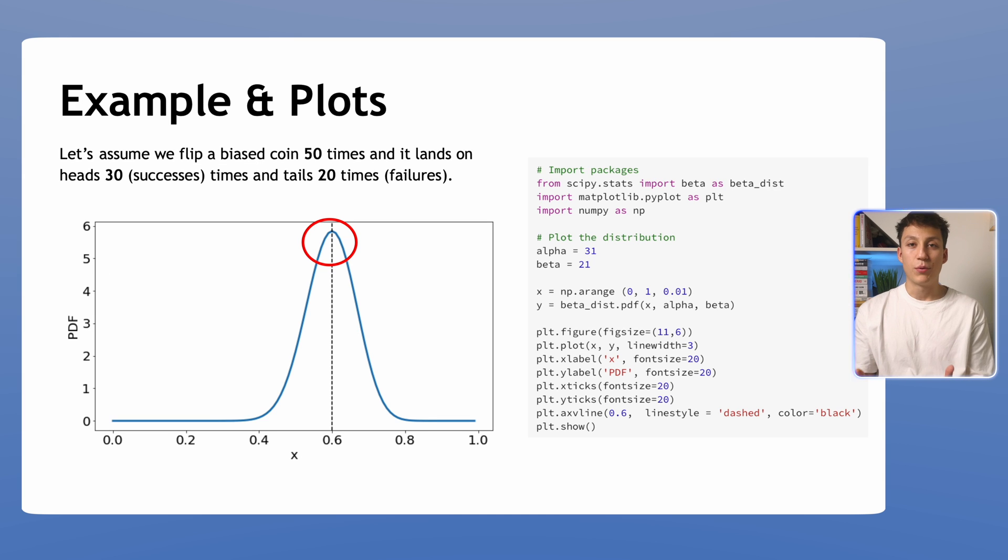Here's a really simple example. Let's assume I have a biased coin and I flip this coin 50 times and it lands on heads 30 times, which is our success, and lands on tails 20 times, which is our failure. We can plot this in Python on the right here. All we do is call this beta dist function from the scipy stats module. This is just calling the beta distribution PDF and then we have our data here. We know generally it was alpha minus one so in this case we need to add a one to make sure we have 30 successes, so we have alpha 31 and beta 21 for our corresponding successes and failures.